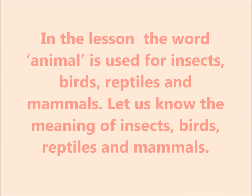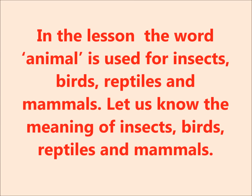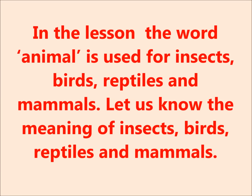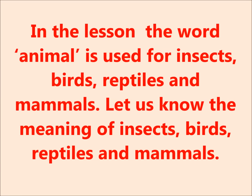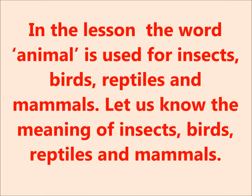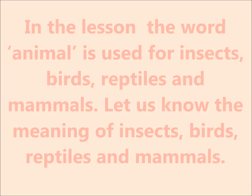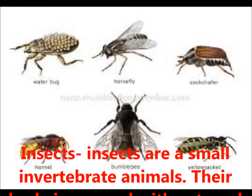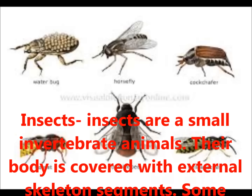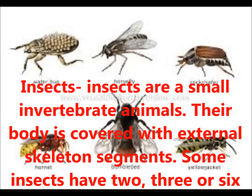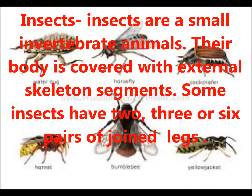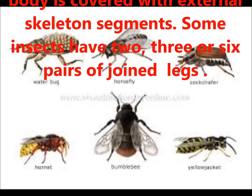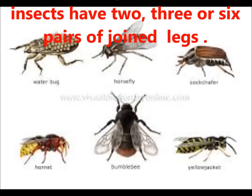In this lesson, the word 'animal' is used for insects, birds, reptiles, and mammals. Let us know the meaning of each. Insects are small animals that have six legs and generally one or two pairs of wings.